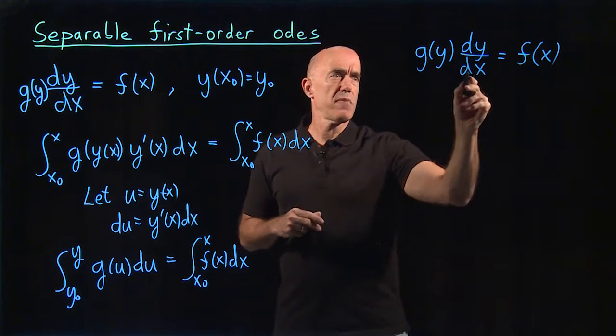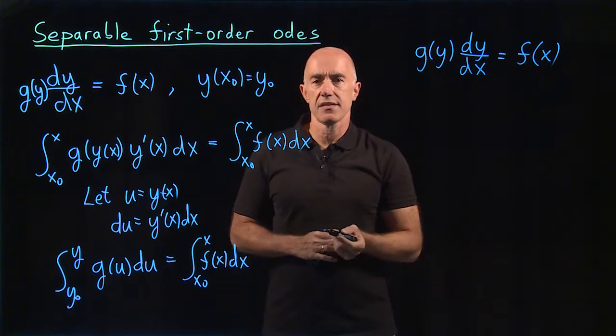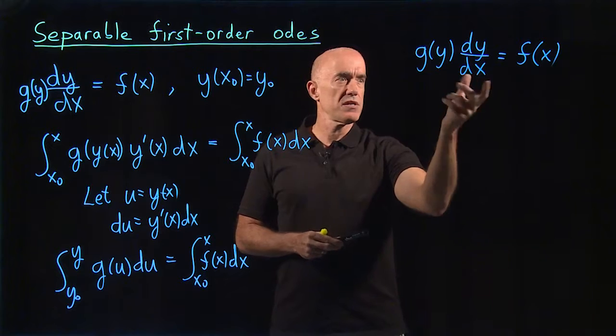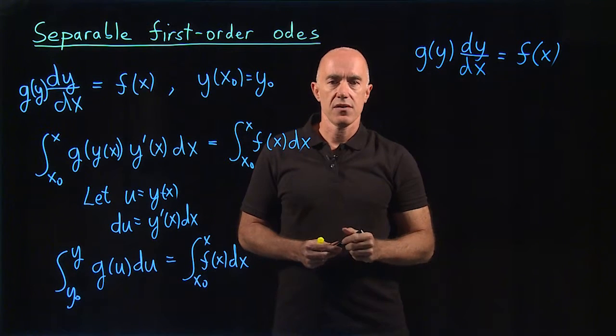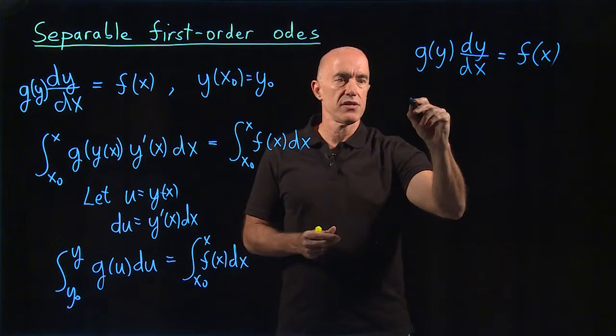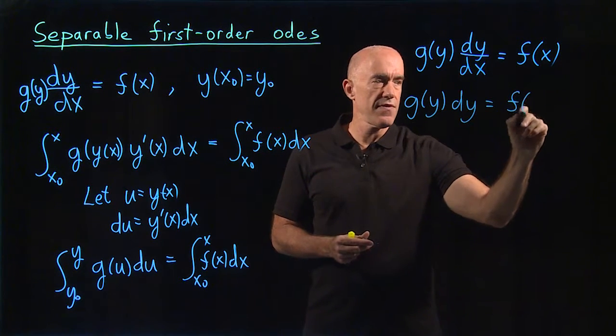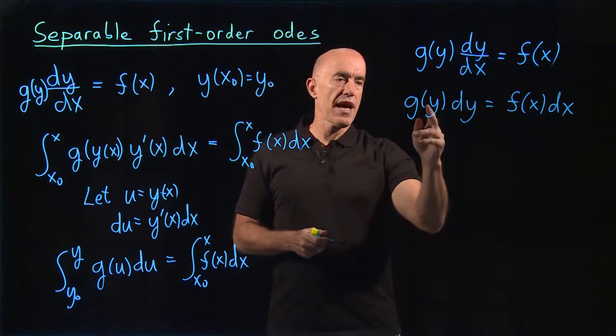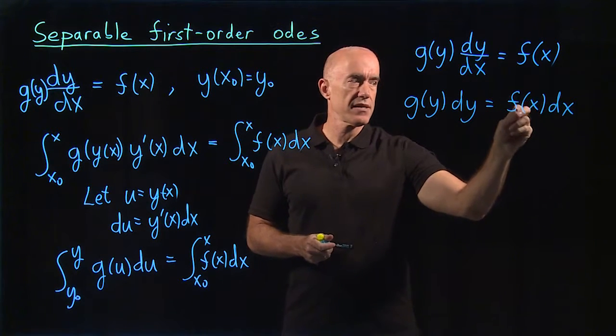What you do is you take advantage of this Leibniz notation for the derivative. We know dy/dx is not really a fraction. It just means the derivative of y with respect to x. But in this particular situation, you can treat dy/dx like a fraction. So that will eliminate this substitution step. So if you treat dy/dx like a fraction, you can write this as g of y dy equals f of x dx.